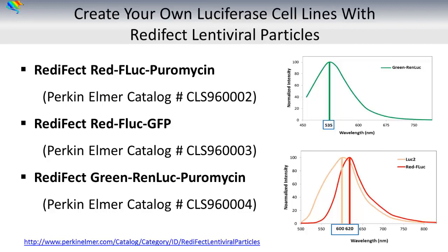Creating your own Luciferase cell lines with the Red Effect lentiviral particles from PerkinElmer facilitates easy labeling. There are three constitutive constructs to choose from. The first encodes the Red Italian Firefly Luciferase emitting at 620 nm. The second co-expresses the Red Italian Firefly and GFP, facilitating immunohistochemistry and flow cytometry. Keep in mind that GFP attenuates Firefly Luciferase about 10-fold. Lastly, a new and very bright Renilla Luciferase is featured that emits at 535 nm.